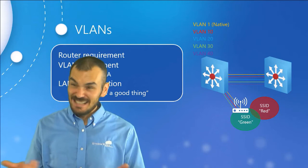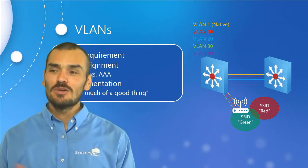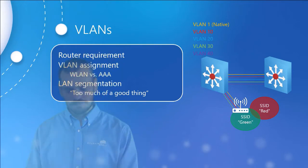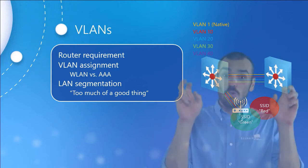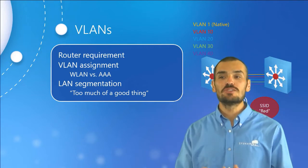In many ways, a wireless LAN is kind of like a wireless VLAN. When it comes to router requirements, controllers have the ability to extend VLANs out to their access points, but we still need a router to handle routing among the VLANs. Most VLANs are segmented into different subnets, and the controller doesn't have routing capabilities, so don't make the mistake of thinking you can get rid of your router.